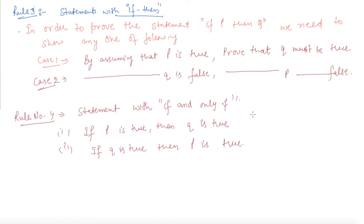Students, in doing the questions, we can check which statements we need to work upon. If it is an if-then statement, we need to work upon those two cases. If it is an OR or if-and-only-if statement, then we need to use the respective rule. With this, our chapter on mathematical reasoning ends. I hope you are clear about this chapter. If you have any questions, please do comment in the comment section. Thank you. Happy learning.